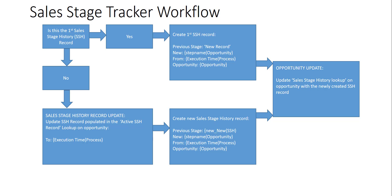On the 'yes' path, we're going to create that first sales stage history record. We're going to hard-code the previous stage and set it to 'New Record.' In the new field, we'll put in the pipeline phase field from the opportunity — 'step name' is the system name. Then we'll set the from date and time to the execution time of that real-time workflow. Lastly, we need to tie it back to the opportunity by selecting the opportunity that triggered the workflow for the opportunity lookup in that sales stage history record. After that, we update the opportunity and set the sales stage history lookup field with the record we just created.